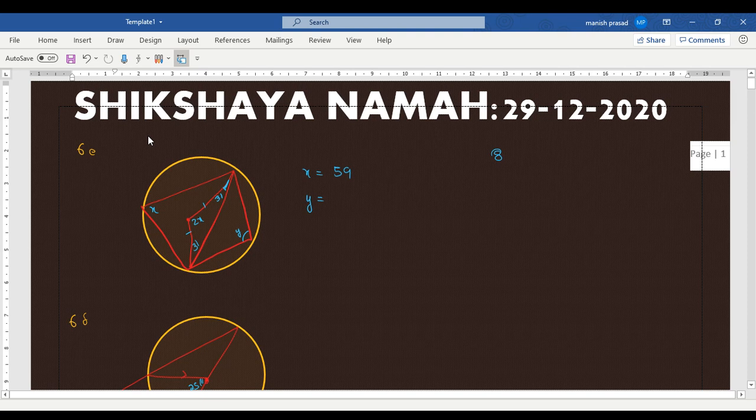And what is y? Y will be 121. See, in a cyclic quadrilateral, the sum of the opposite angles is what? They're equal? No, not equal. They're 180. So if x is 59, take it as 118.